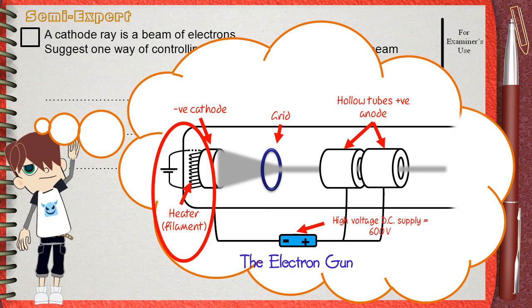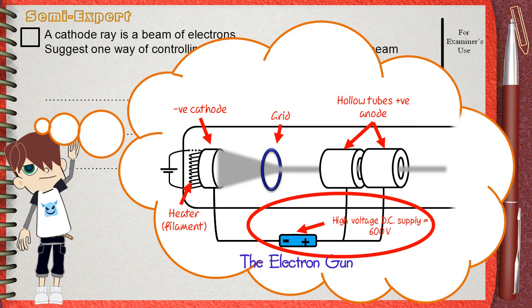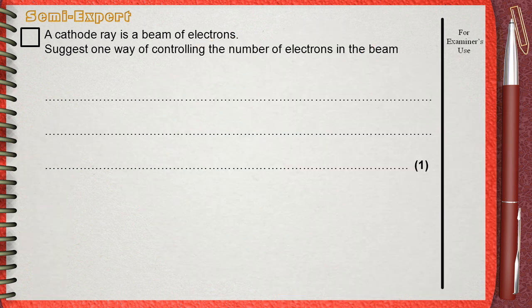A third possible method to control the beam of electrons is the amount of voltage supplied by the DC supply. When this voltage increases, the number of electrons and the speed of electrons moving from the cathode to the anode will also increase. Three possible methods we can use. He only needs one of them.